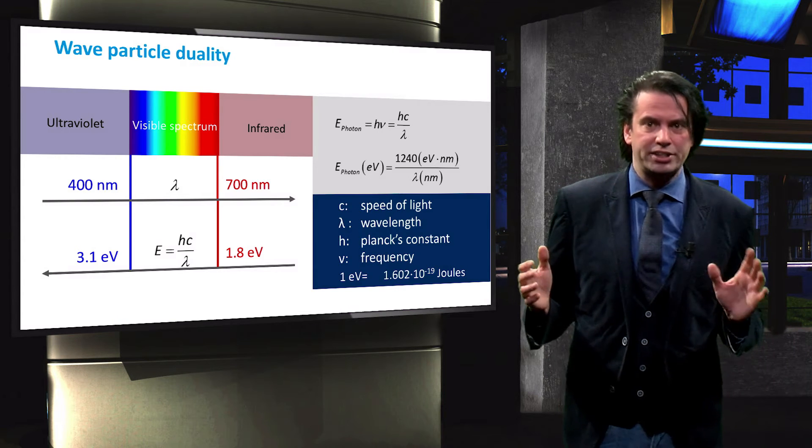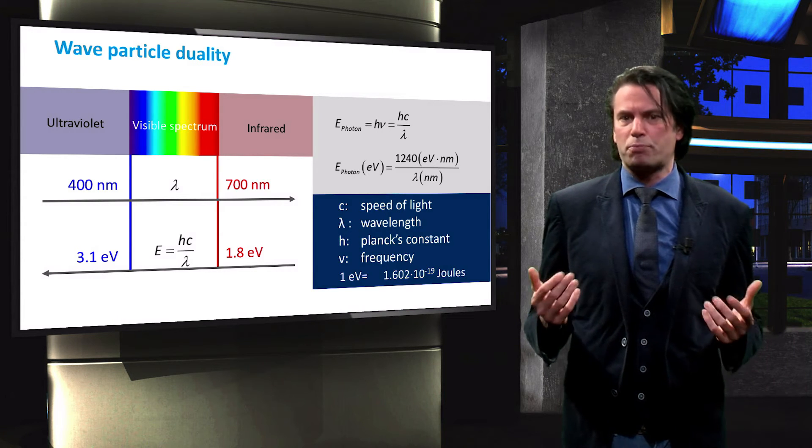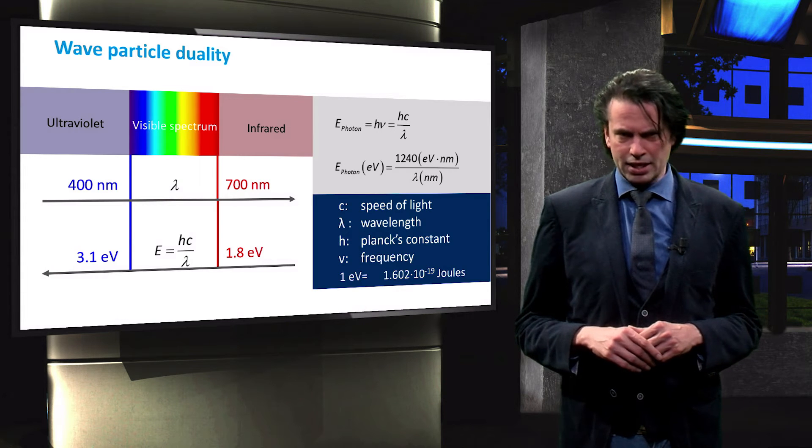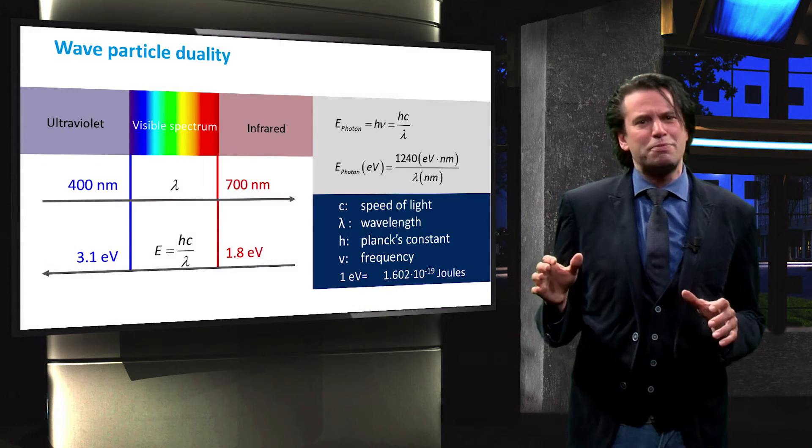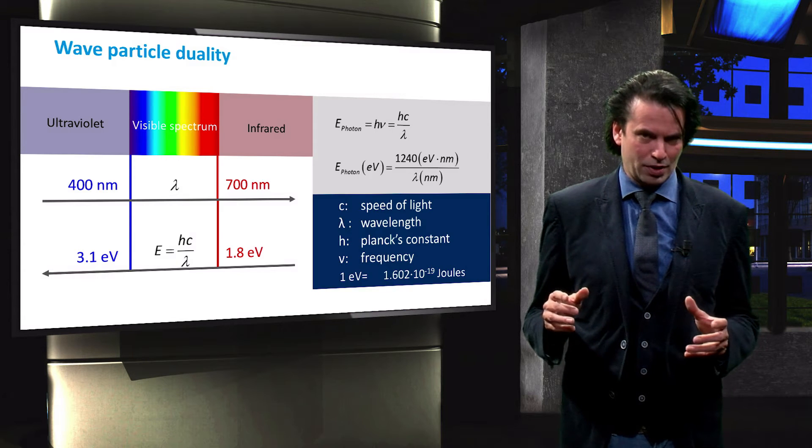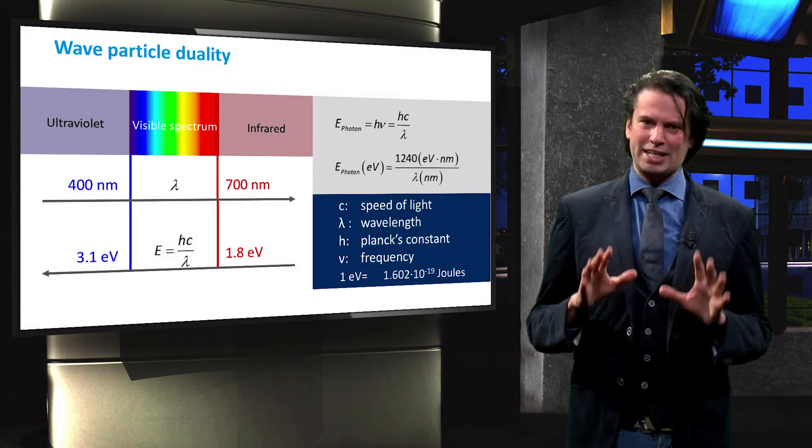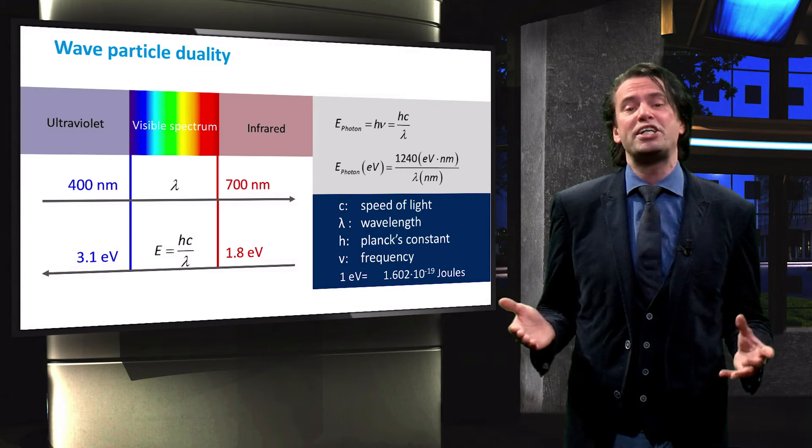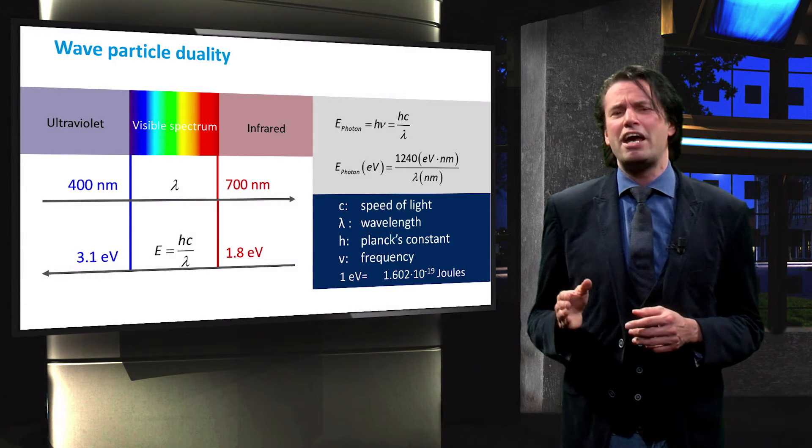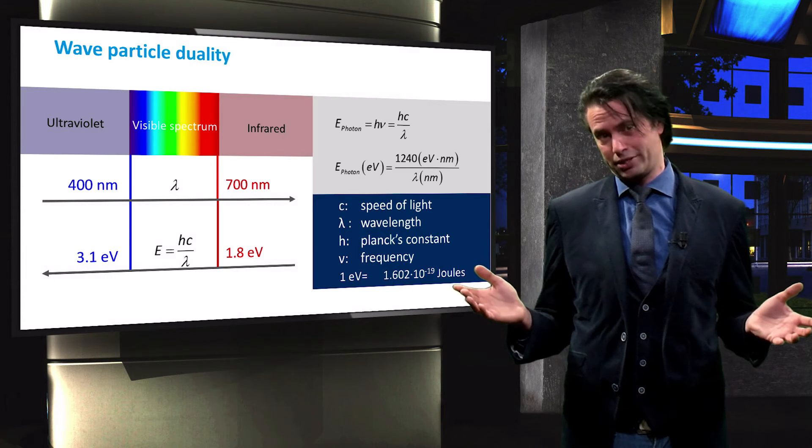Wave-particle duality is a very intriguing property of quantum mechanics, and its interpretation has been subject of many discussions. For this course, however, we will just accept that, depending on the situation, light might behave as a wave or as a particle.